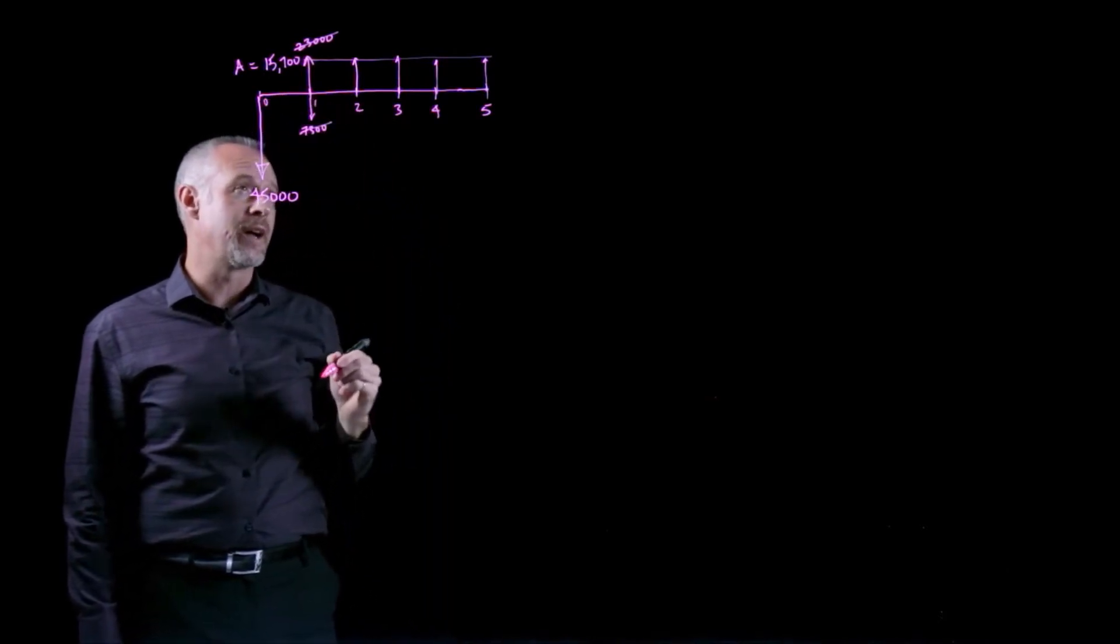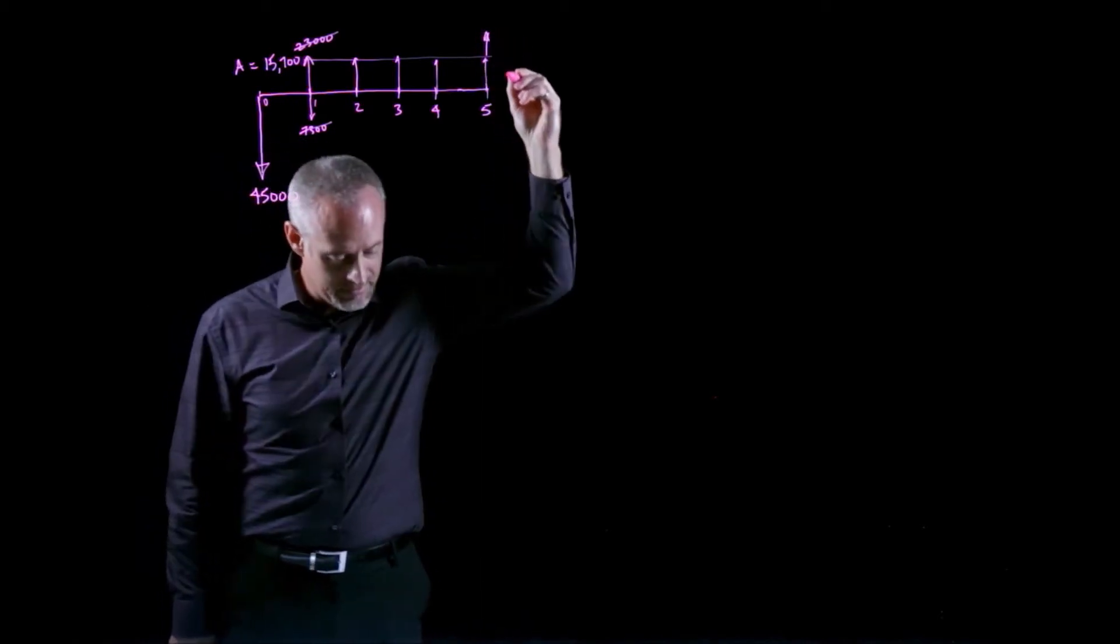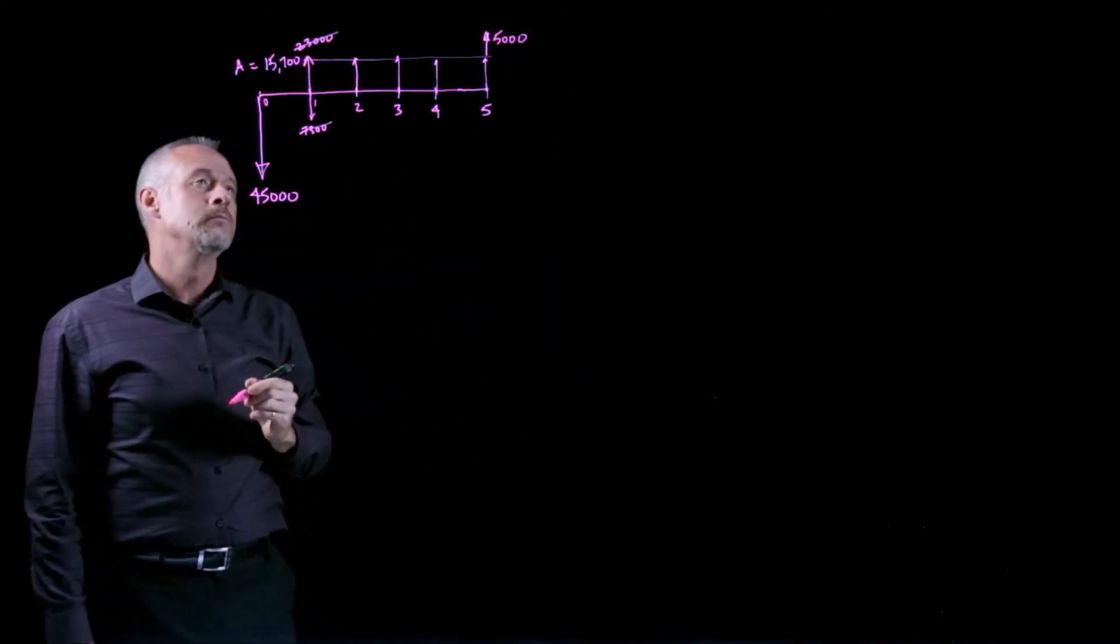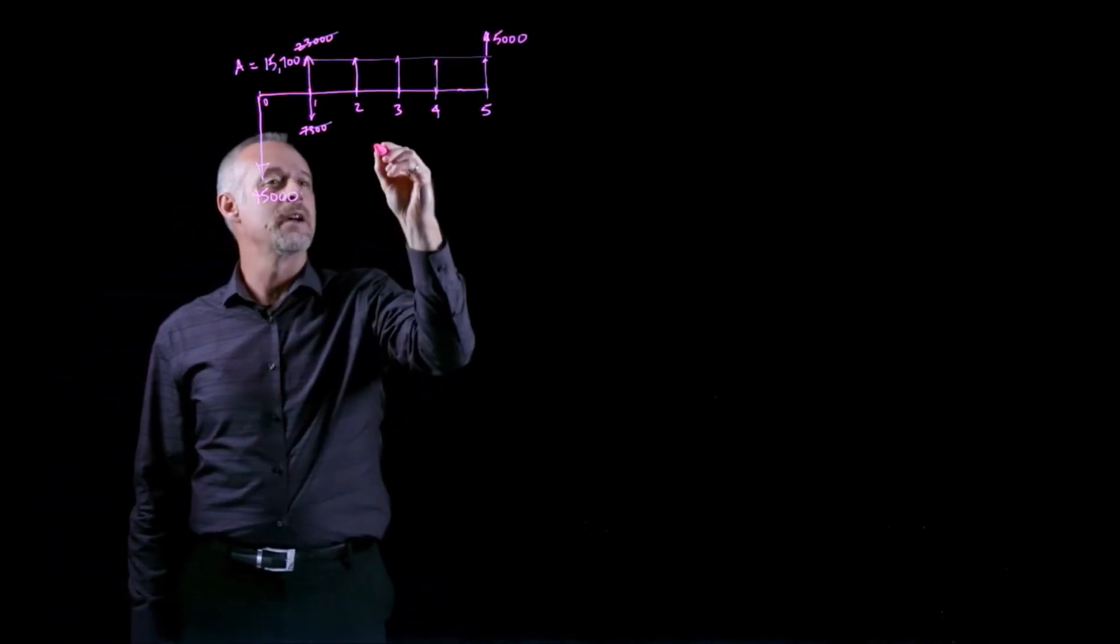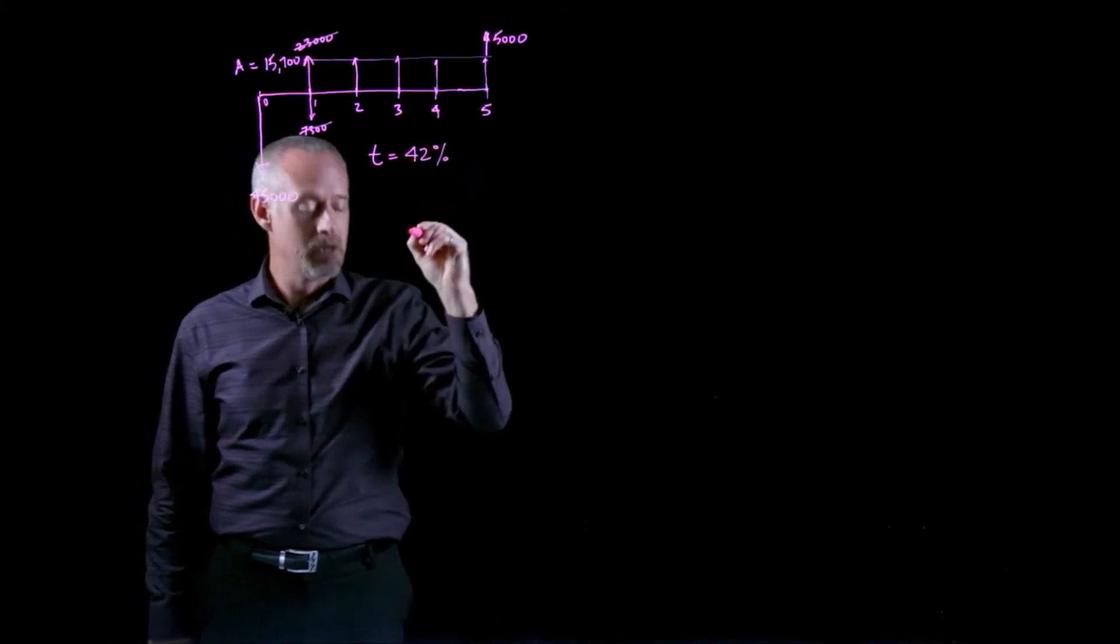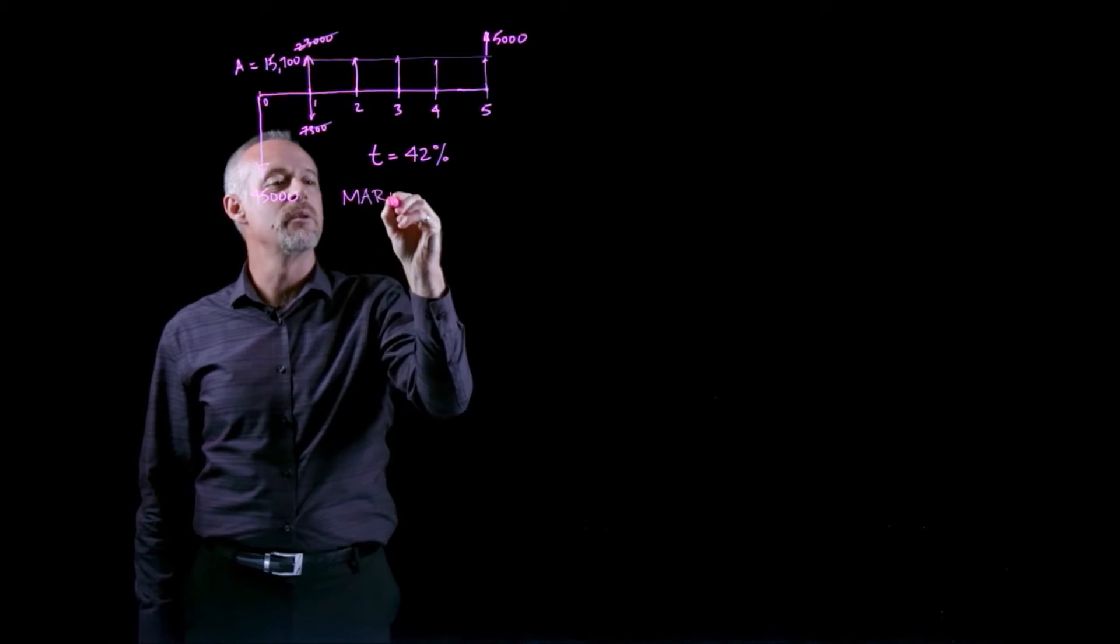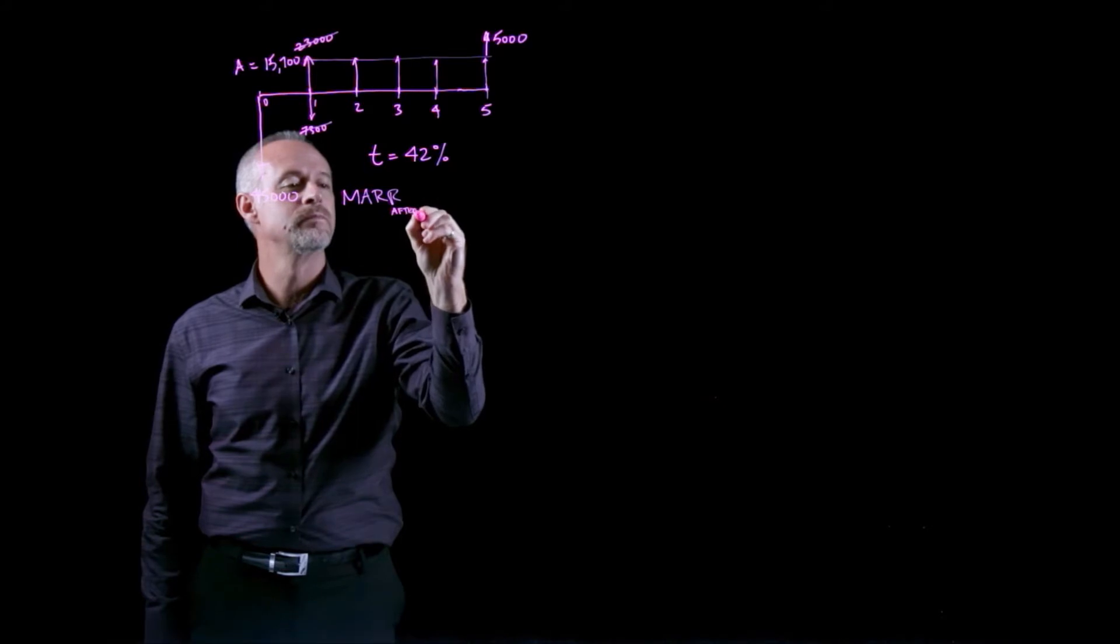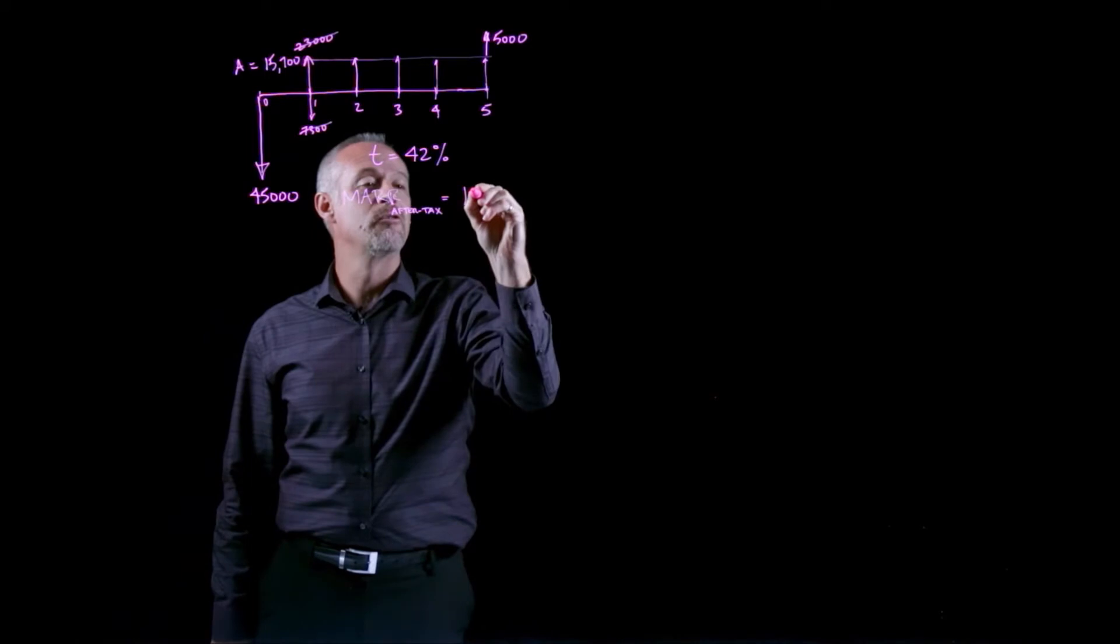We're also told that the equipment has a salvage value, so we get a little bit of money at the end, and that is $5,000. We're also told in the problem that the company has a tax rate of 42%, and they have a MAR. That's their minimum attractive rate of return, and this is an after-tax MAR of 12%.